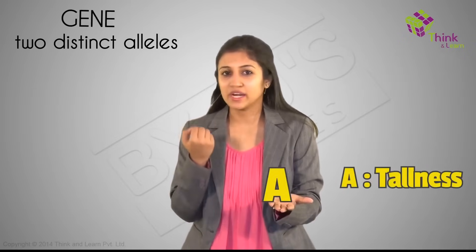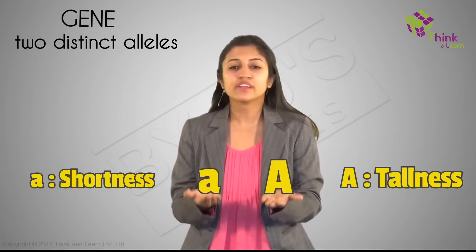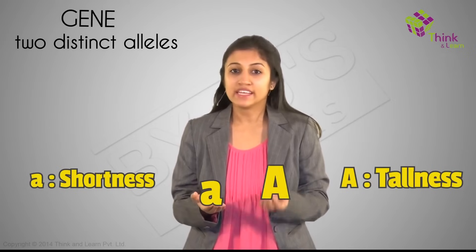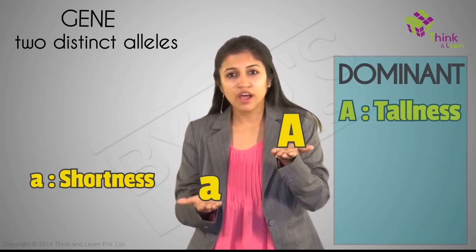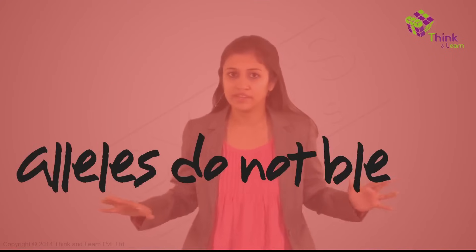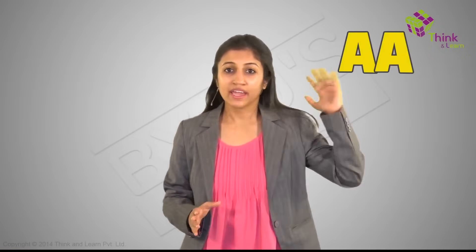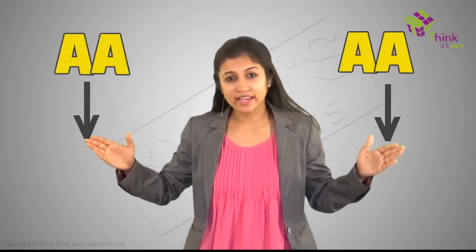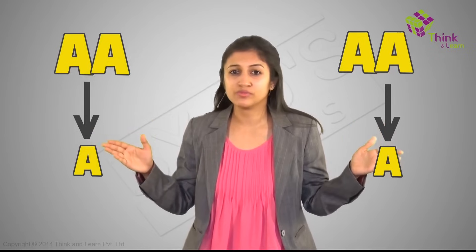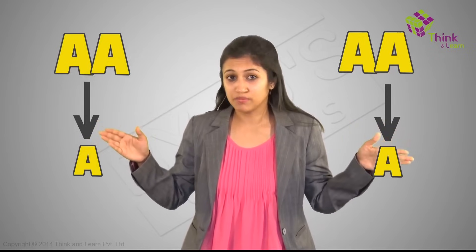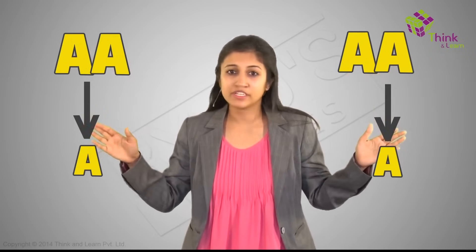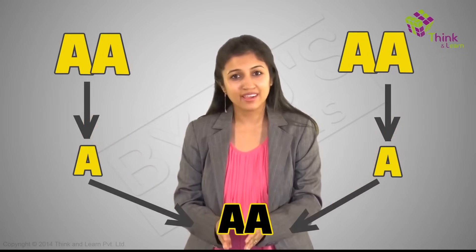Each pollen grain and egg has one height gene, so the plant formed by their union has two. The gene comes in two distinct types or alleles — one allele A for tallness and one small a for shortness. Depending on what they inherited, a plant can have same or different alleles. The allele A is dominant over a, so a plant with a combination of Aa would still be tall. The alleles do not blend. Taking you back to what I taught earlier — sex cells are haploid and all other cells are diploid.